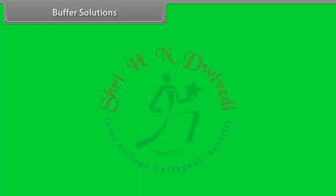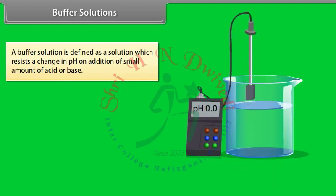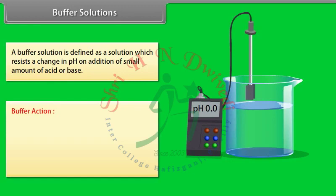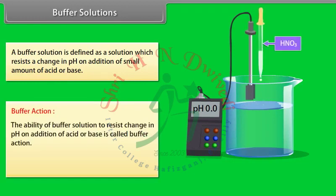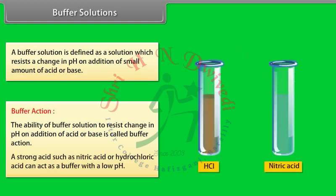A buffer solution is defined as a solution which resists a change in pH on addition of a small amount of acid or base. The ability of a buffer solution to resist this change is called buffer action. A strong acid such as nitric acid or hydrochloric acid can act as a buffer with a low pH.